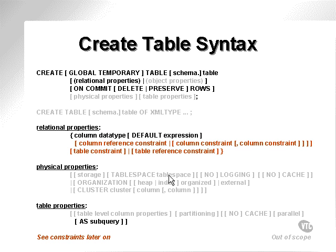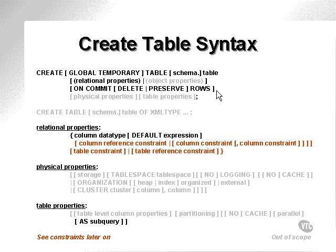The two types of tables we really want to cover at this stage are the relational tables — CREATE TABLE table_name relational properties — and temporary tables, which is CREATE GLOBAL TEMPORARY TABLE, with the option of ON COMMIT DELETE or PRESERVE ROWS. Let's go into a little bit more detail.